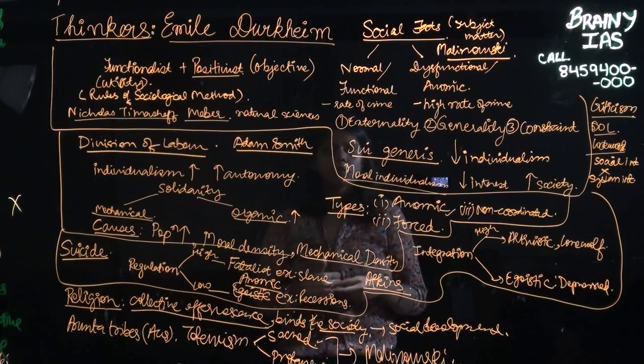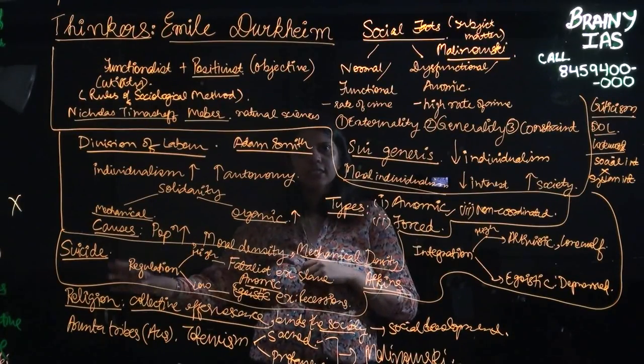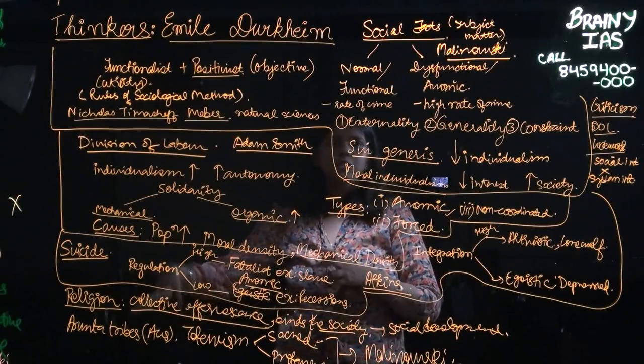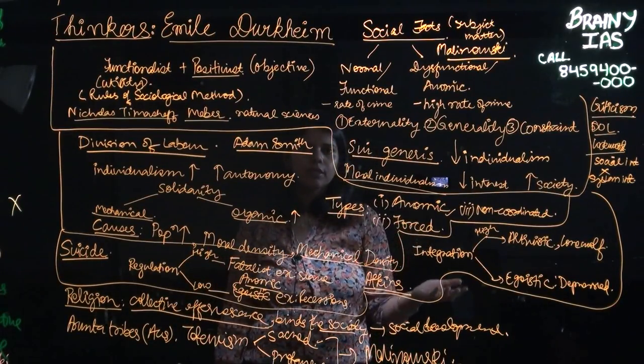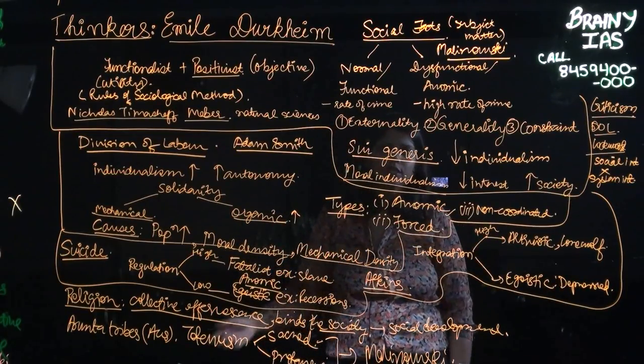Furthermore, Durkheim studied a primitive society. He studied the Aruntha tribe of Australia, which were a primitive society. Whereas, Weber studied a far matured Protestant society in Western Europe.